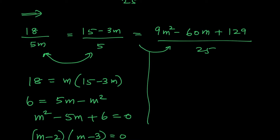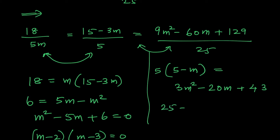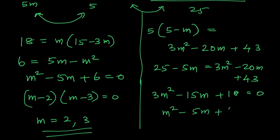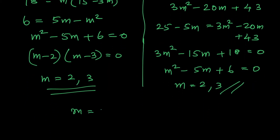We also check the other equation. Cancelling 5 in the denominator and 3 in the numerator: 5(5 − m) = 3m² − 20m + 43, giving 3m² − 15m + 18 = 0, i.e., m² − 5m + 6 = 0. Again m = 2 or m = 3. So the solution is m = 2 and m = 3.